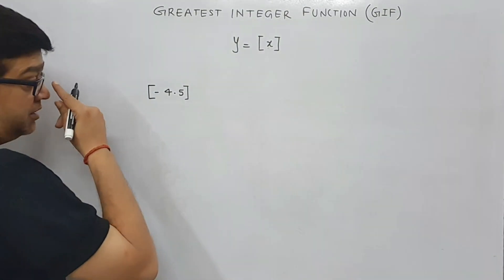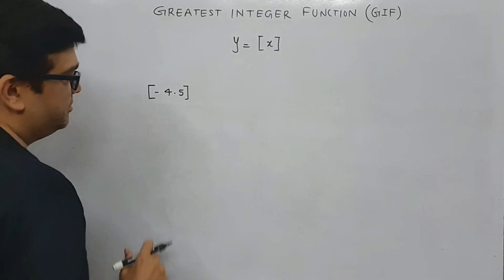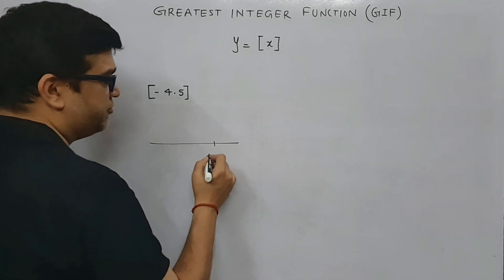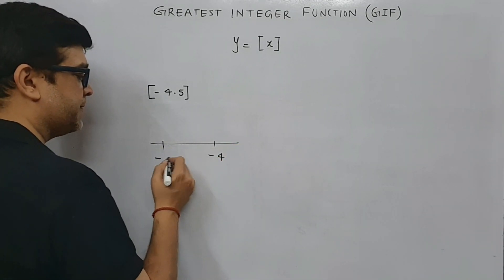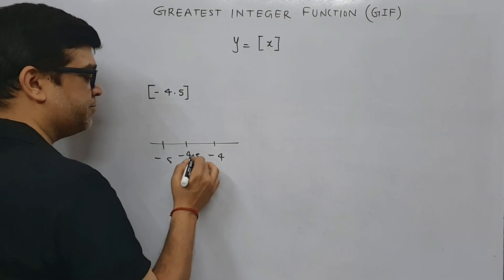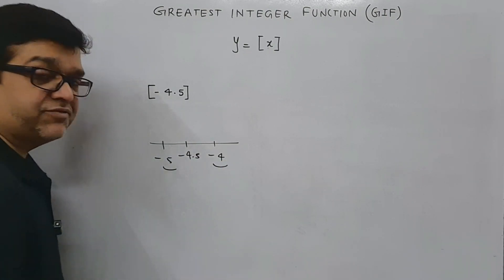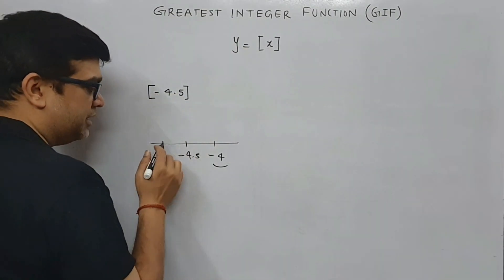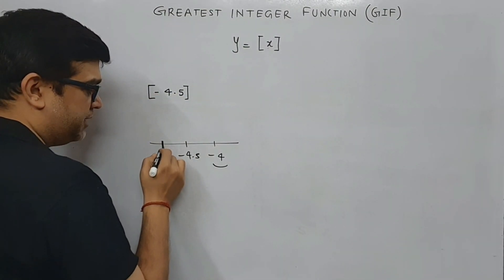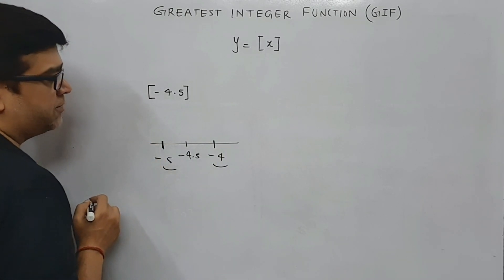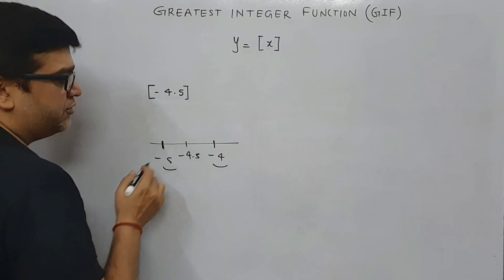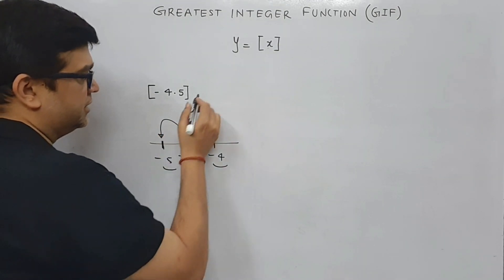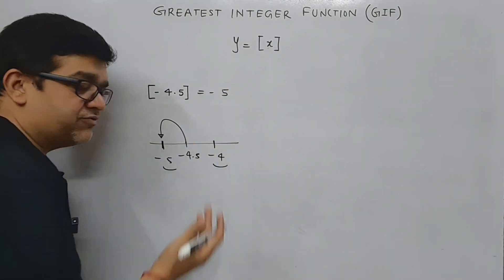Let's take a negative non-integer: box of minus 4.5. Now minus 4.5 lies between minus 5 and minus 4. It is a non-integer, so as per the rule, box of minus 4.5 will be the immediate left integer, and that is minus 5.